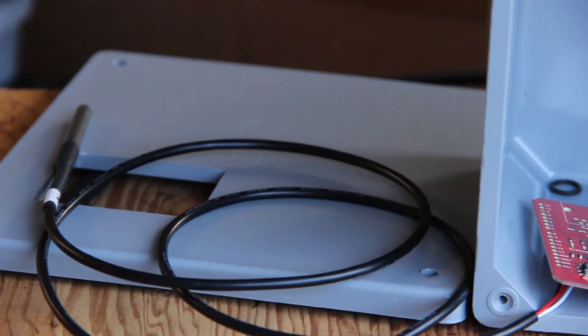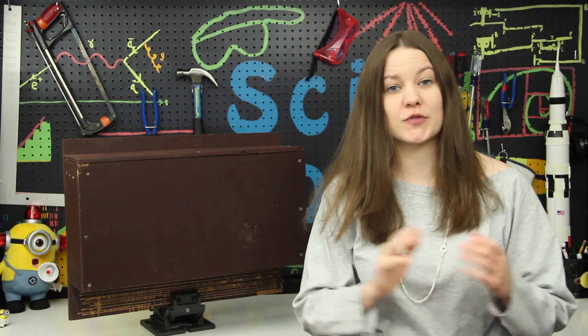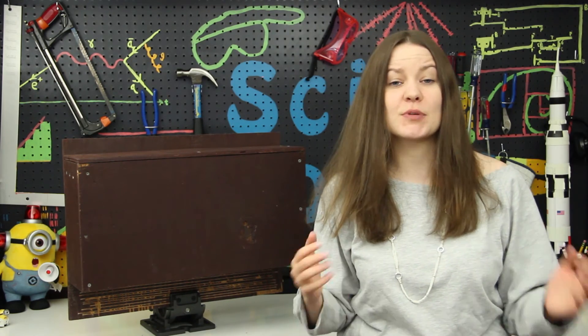The electronics will all be housed inside a box and powered by a solar panel and a battery. After some field testing, we're going to be releasing the code and wiring diagrams for you guys to use. And if you build a bat box or set up these electronics, please let us know.